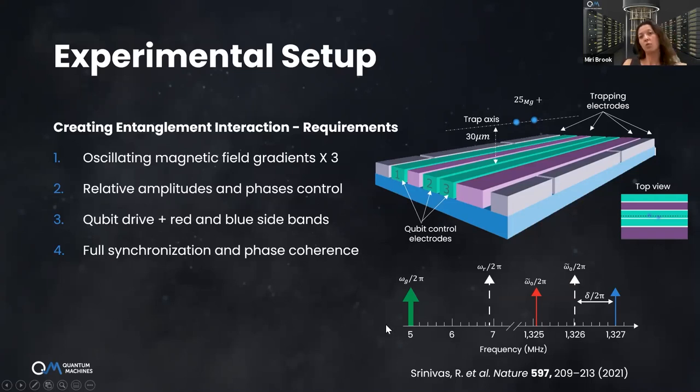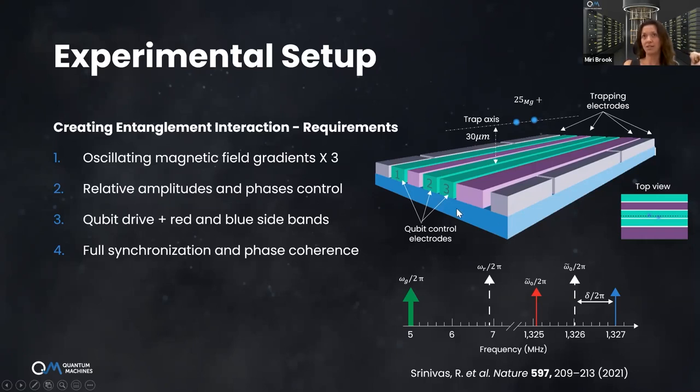To allow red and blue sideband transitions indicated over here. In addition, everything needs to be fully synchronized and have phase coherence. All these need to have a shared clock. It's quite a challenge control-wise. And indeed, the implementation doesn't look so straightforward out of the box. This is how these guys implemented the control for this experiment. One, two, and three are the electrodes from the trap. We see the electronics for the qubit control.